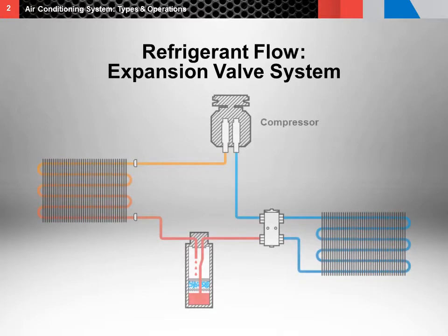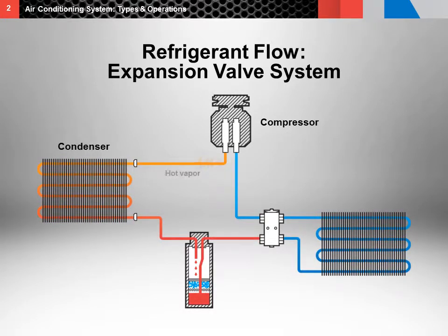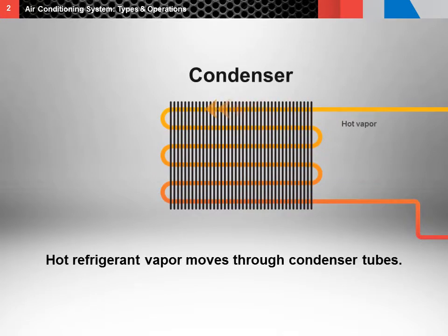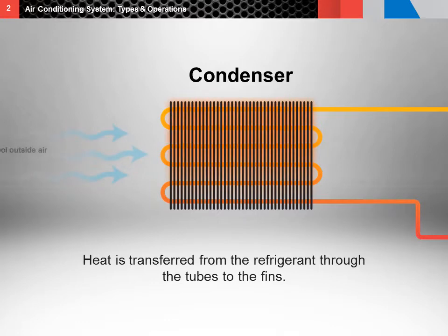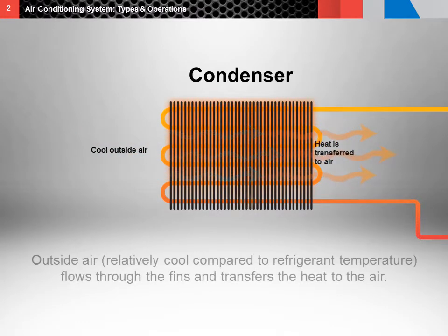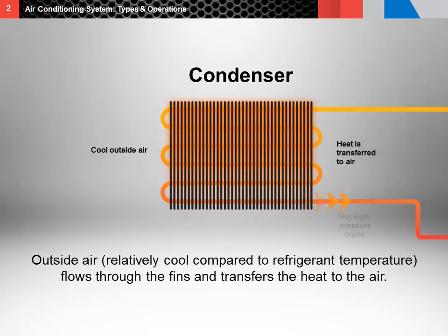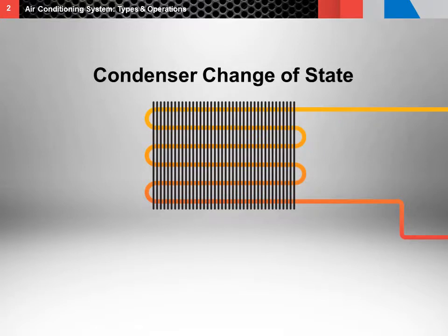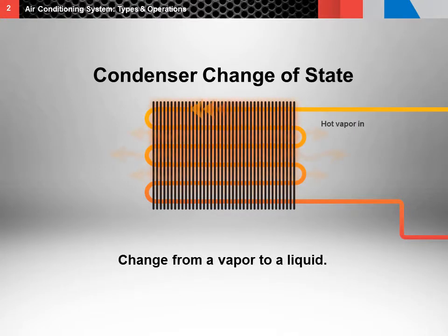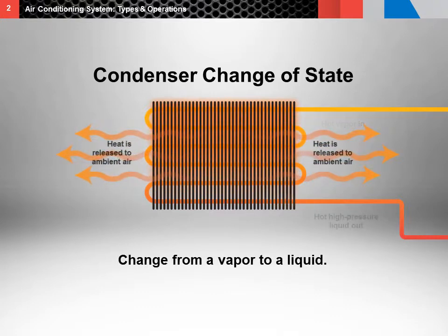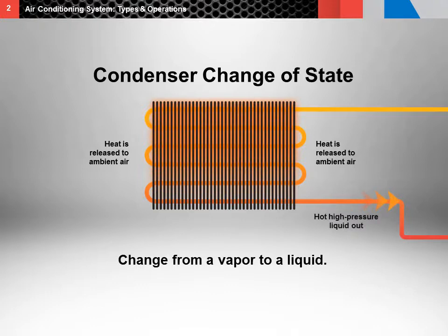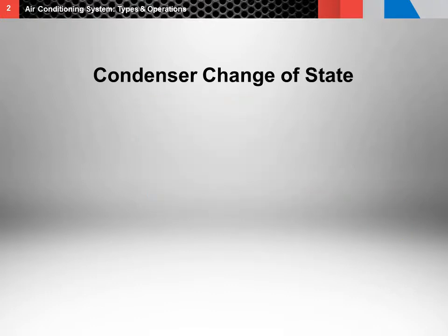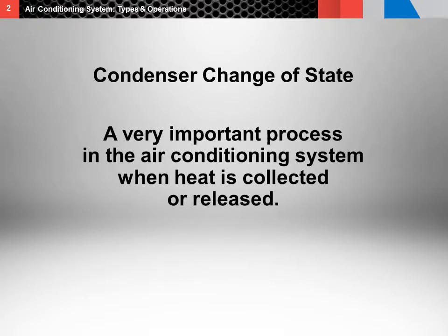Next, the refrigerant moves from the compressor to the condenser as hot, high pressure vapor. The hot refrigerant vapor travels through the condenser tubes and heat is transferred from the refrigerant to the fins. Then, as the cool outside air flows past the fins, heat is transferred to the air. The vapor is cooled and condensed and turns into liquid — this is called change of state. In the condenser, this change of state allows the refrigerant to change from a vapor to a liquid by releasing heat to the ambient air, releasing the heat collected inside the vehicle cab.